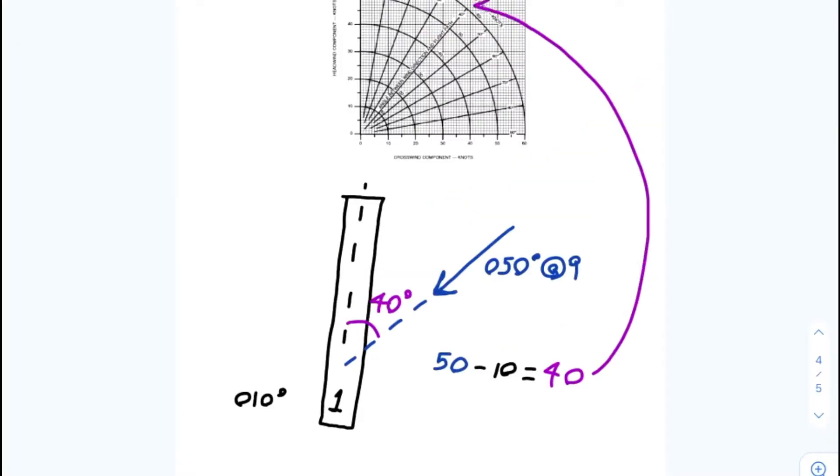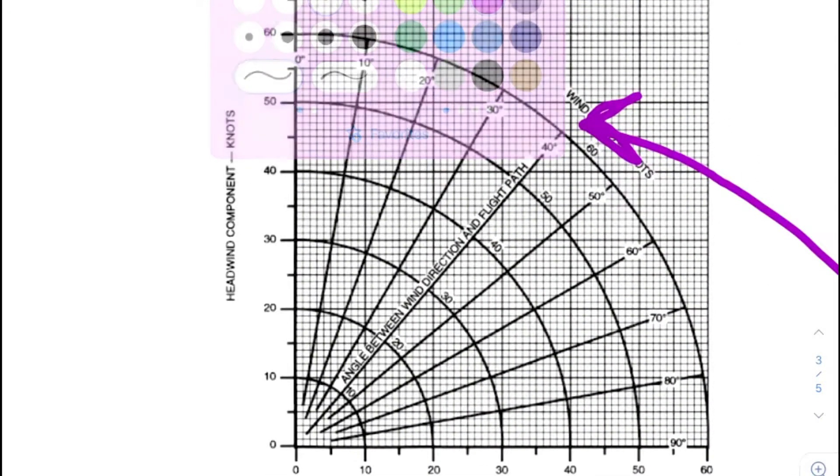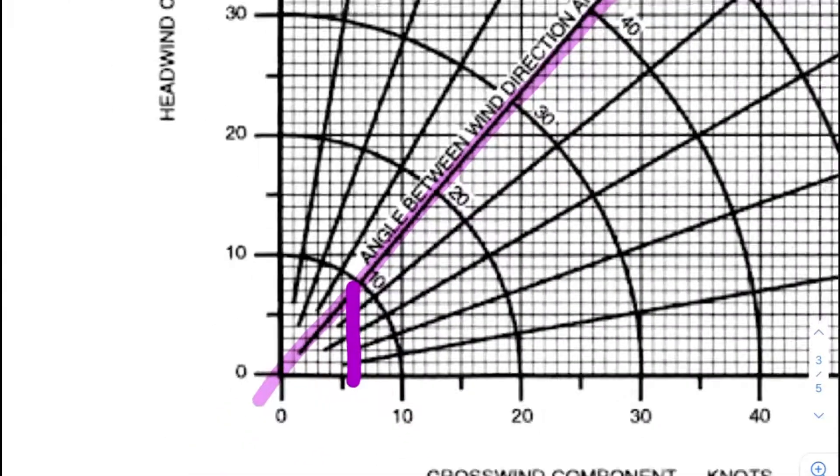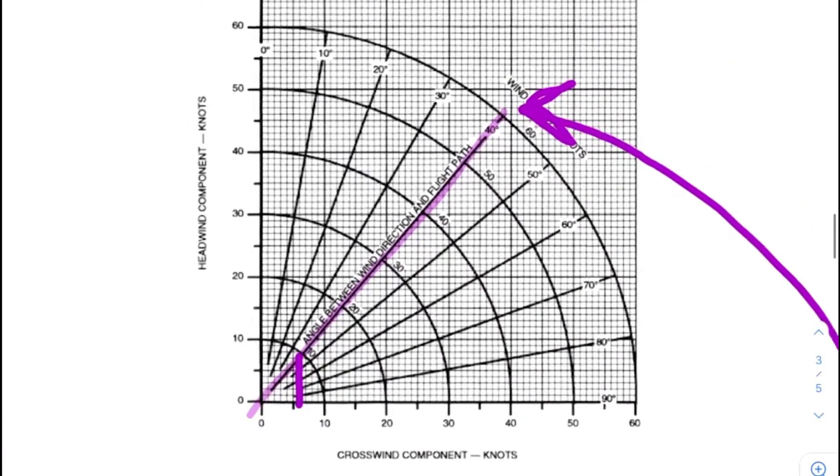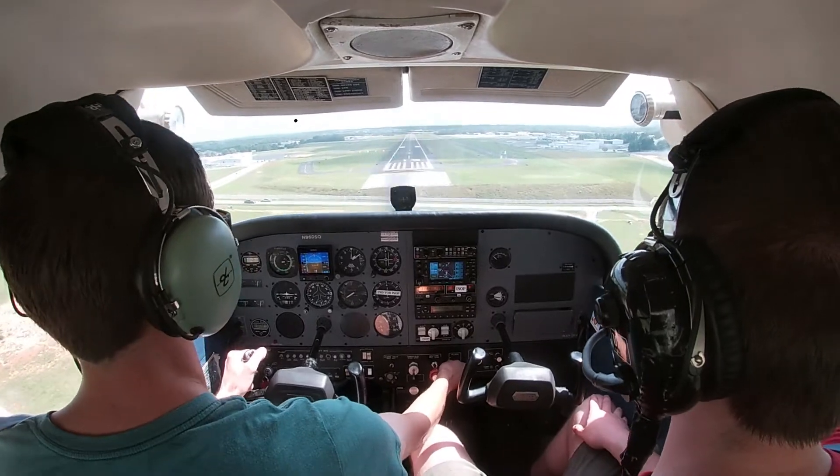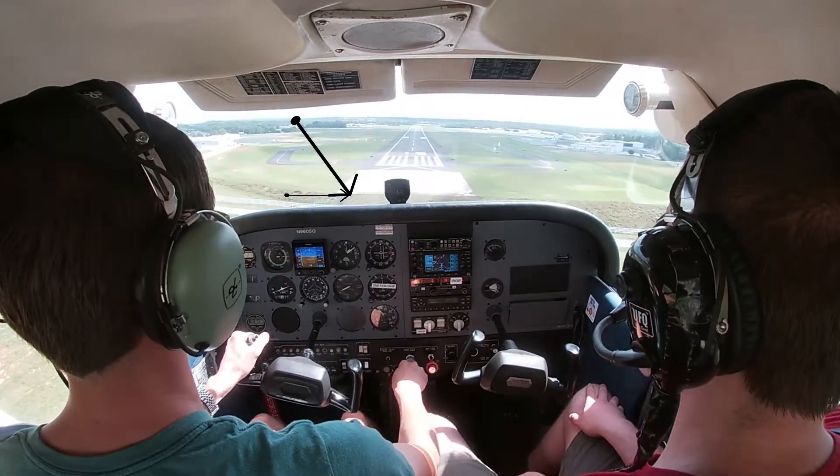As before, trigonometry could be used to find the exact values, but a wind component chart is far easier. These simple charts do the hard work for you, so all you have to do is note how far off the wind is from the runway and how strong it is. From there, the amount of that wind that is acting as a crosswind can be calculated.